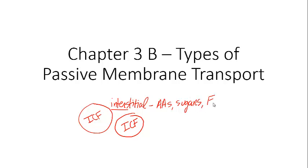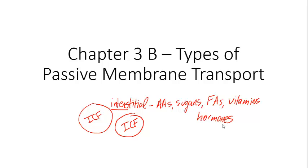The interstitial fluid includes fatty acids, vitamins, as well as other things like hormones and neurotransmitters. Our membranes have a very important characteristic which we refer to as differential permeability or selective permeability.